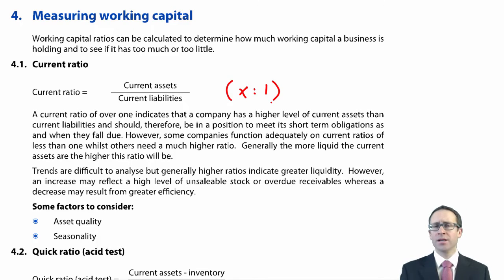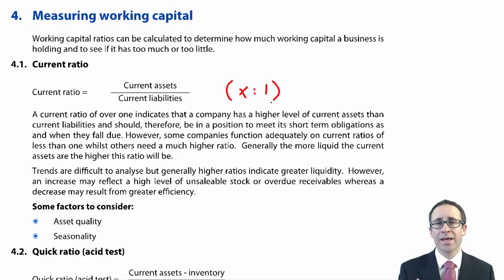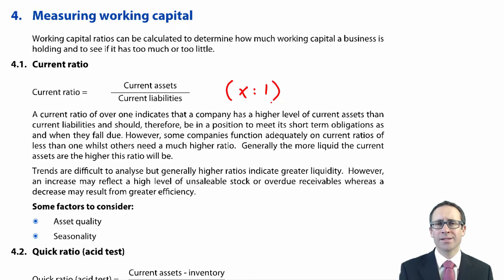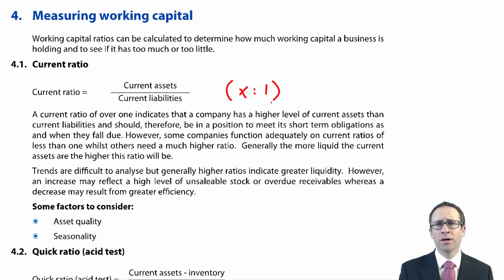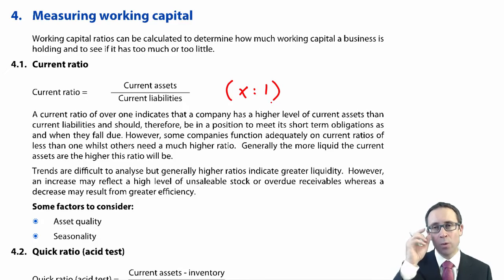You may have what appears to be an appropriate current ratio, but if you have old obsolete inventory, or receivables with a very long collection period that are overdue, the quality of those assets is poor and they won't necessarily be readily convertible into cash. This renders the ratio less useful. Seasonality is also a factor — the holiday industry is very seasonal, with more people on holiday in summer, which impacts current assets and current liabilities throughout the year.